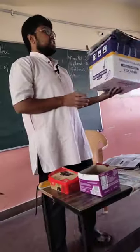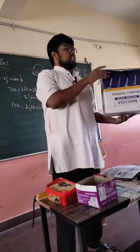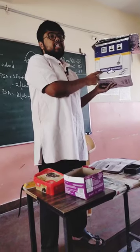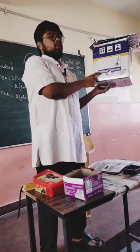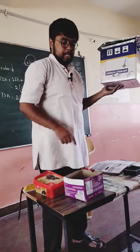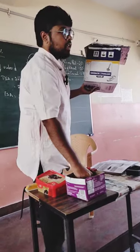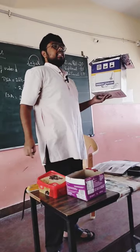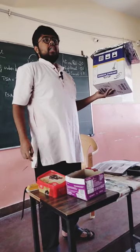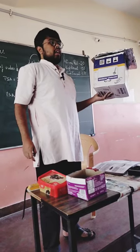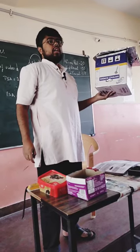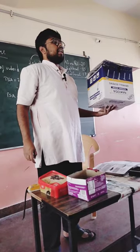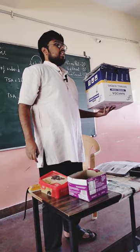Now, we will take this. This has six faces. One face to paint — what is the formula to paint this one? S into S, that is S square or A square. How many faces do you have to paint like this? Six.